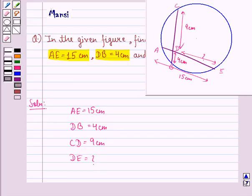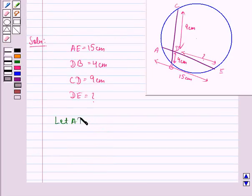First of all, let AD be equal to X. Therefore, DE will be AE minus AD, that is, 15 minus X.